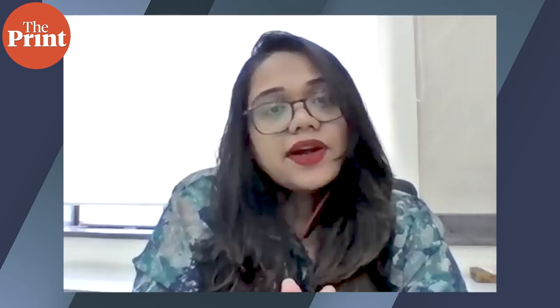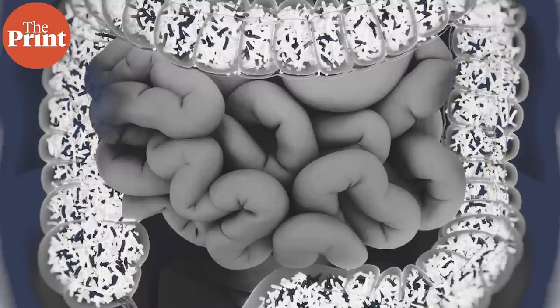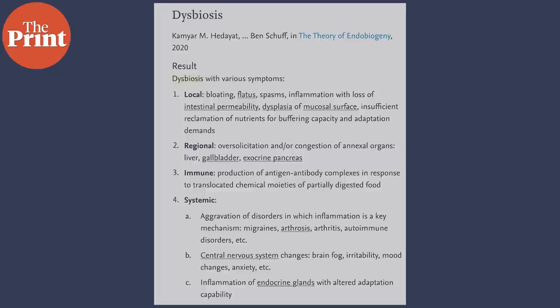Before we go further, it's important to understand the concept of dysbiosis and its relationship with metabolic syndrome such as obesity and type 2 diabetes. According to the journal Nature Medicine in 2020, dysbiosis is defined as a reduction in microbial diversity, combined with the loss of beneficial bacteria such as Bacteroides strains and butyrate-producing bacteria such as Firmicutes, and a rise in pathobionts. This process disharmonizes the symbiotic relationship between good and bad bacteria.